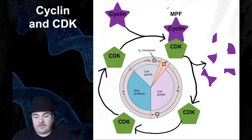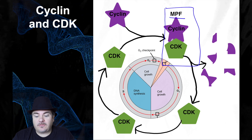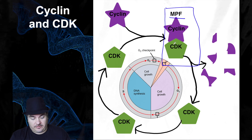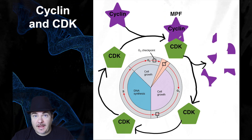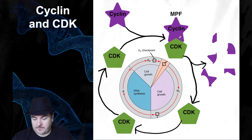When cyclin is bound to CDK, the complex is called MPF, which stands for maturation promoting factor. That's just the name for the two proteins when they're together. And that's how the cell actually passes the checkpoints — with cyclins and CDKs.